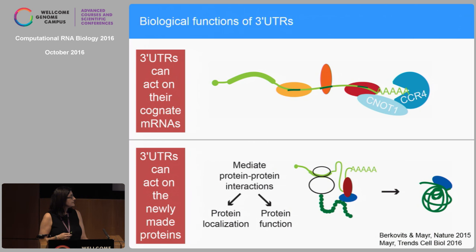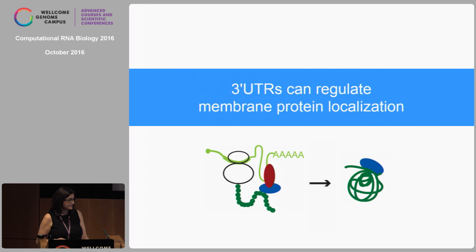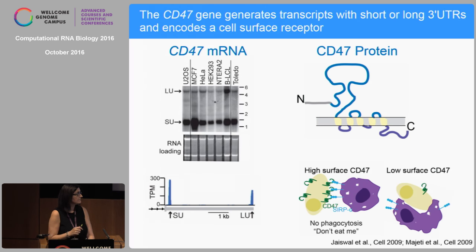What we recently found is that 3' UTRs can also regulate the fate of the newly made protein, and the principle is very similar. A UTR binds an RNA-binding protein, which then recruits through protein-protein interactions an effector protein. This effector protein is then loaded onto the newly made protein, forming a protein complex. Now this protein complex has a different function than the protein alone.